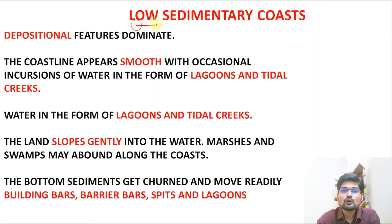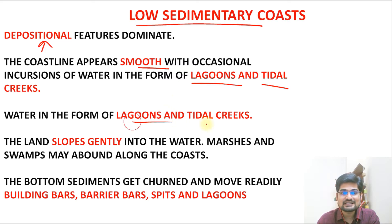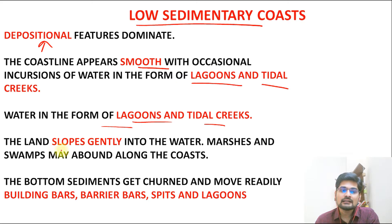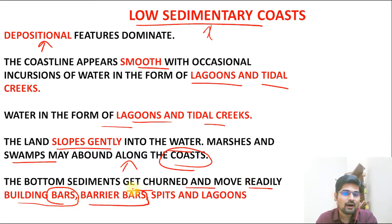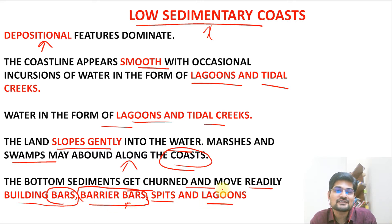In low sedimentary coasts, depositional features dominate. The coast is smooth and has lagoons and tidal creeks — famous features in many parts of the world. The land slopes gently into the water, and marsh and swamp features are present. Bottom sediments get churned and move readily, building various bars — barrier bars, spits, lagoons, tombolos — all these features are part of the lower sedimentary emerged coast.